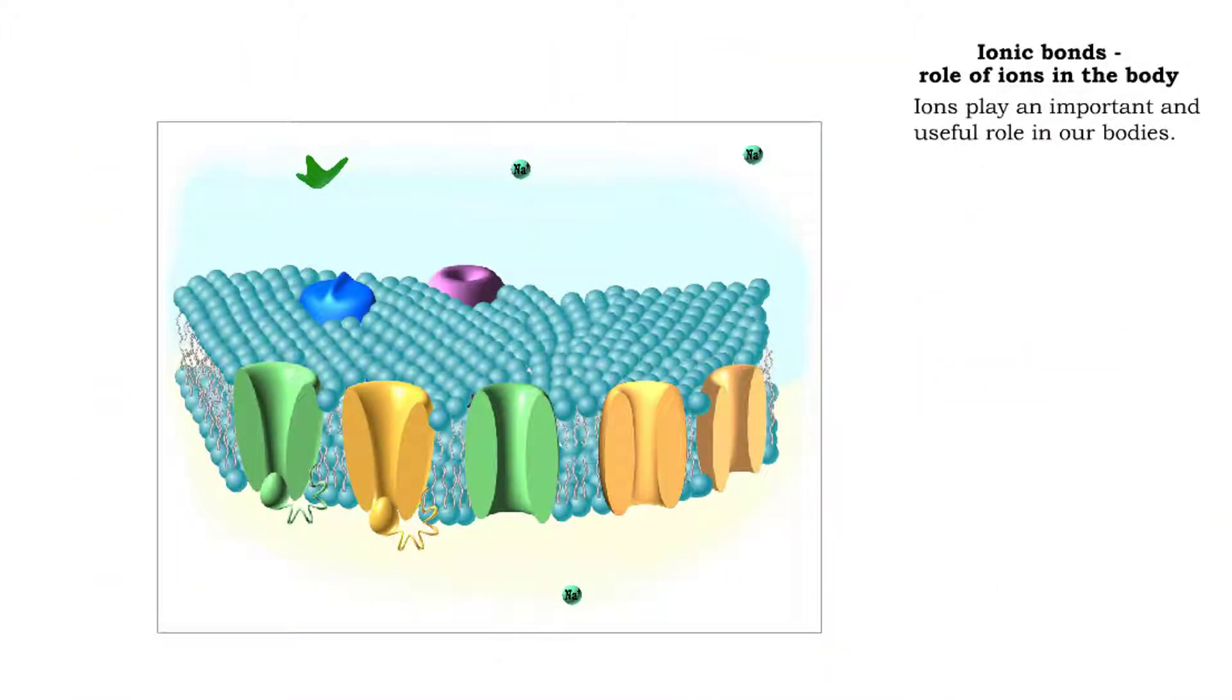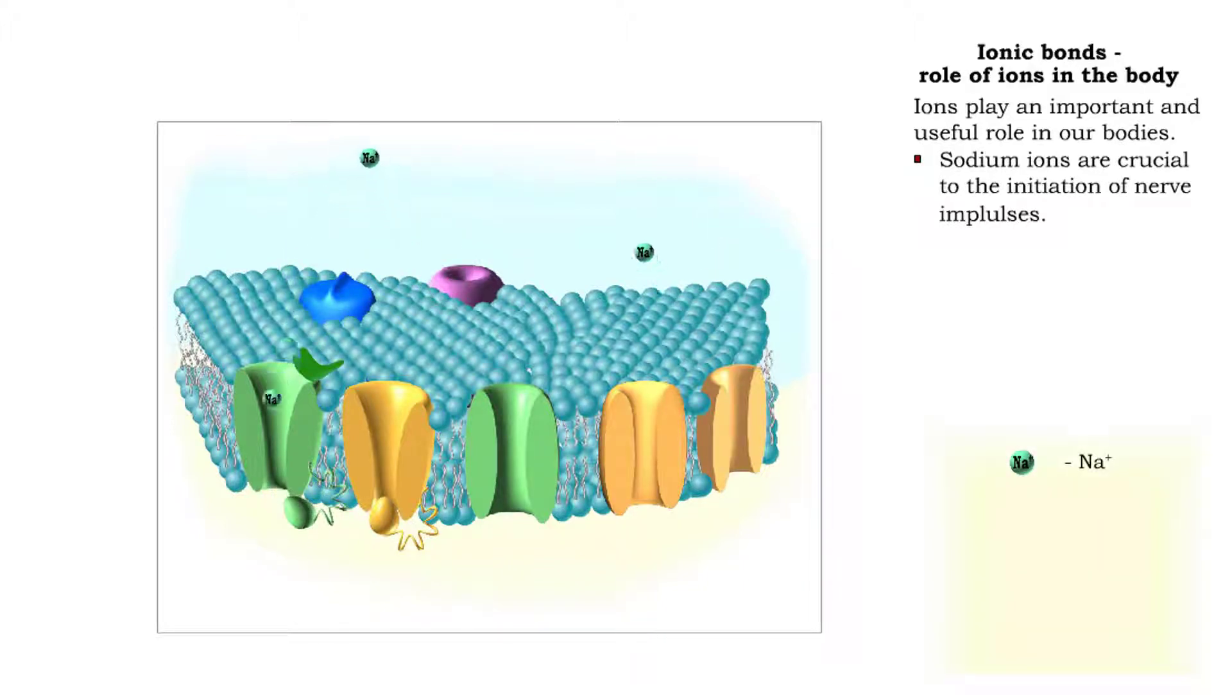Ions are extremely important for maintaining homeostasis. The charges on ions make them very useful. For example, movement of sodium ions through a nerve cell membrane enables nerve impulses to be generated.